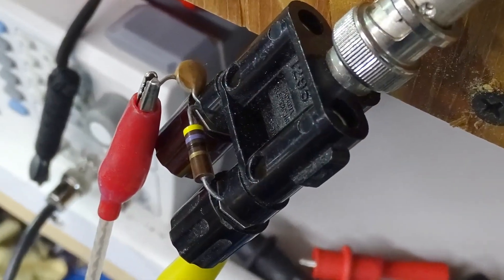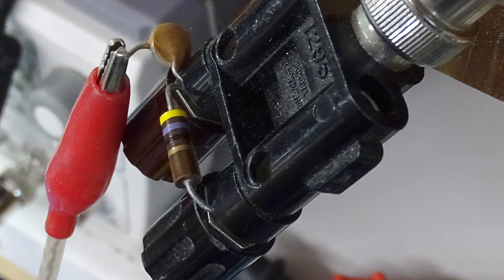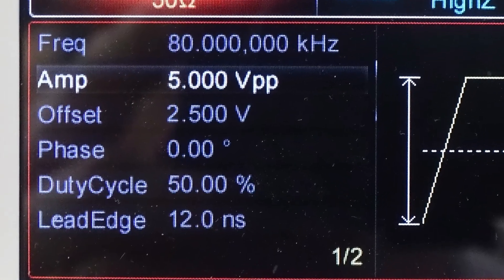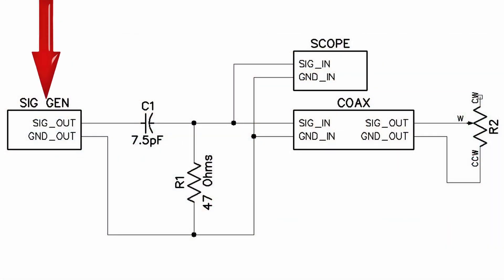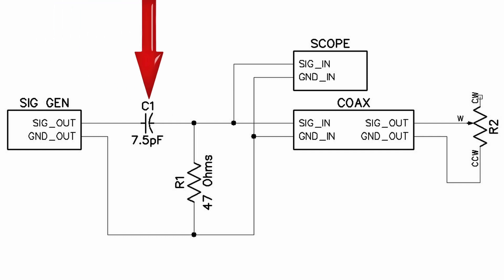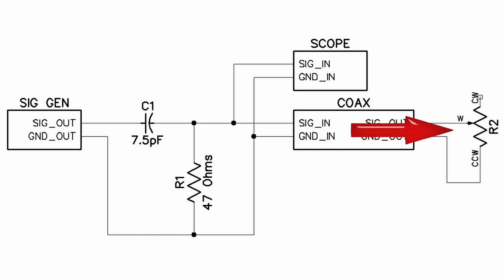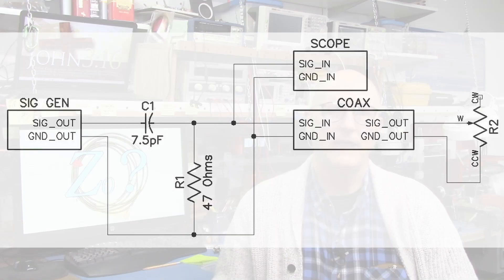If the termination resistance at the end of the coax matches the characteristic impedance, there won't be any reflected pulse to be seen at the source. First we need a very short pulse to send down that transmission line. We can create our own pulse easily using a small capacitor, a fixed value resistor, and a square wave generator. Here's my setup: I have a 7.5 pF capacitor in series with the signal coming from the signal generator, and a 47 ohm resistor in parallel with the input to the oscilloscope. I set my square wave generator to output an 80 kHz square wave at 5 volts peak to peak, and my scope is set to display 10 ns per division. The transmission line is connected in parallel with the scope.